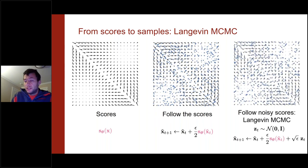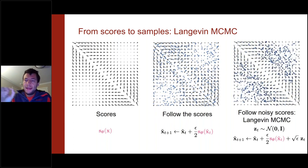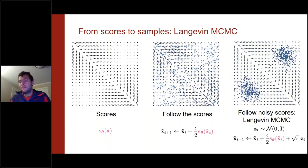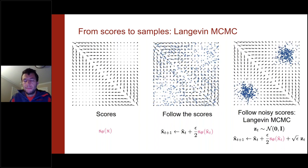This procedure can get stuck in local optima and doesn't explore the whole space. There is a simple fix: instead of just following the gradient, you add a small amount of Gaussian noise at every step. If you run this procedure long enough — called Langevin MCMC — it will produce valid samples from the underlying distribution.